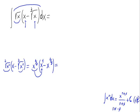x raised to 1 half times x raised to 1 is x raised to 1 half plus 1. And now, minus x raised to 1 half plus 1 third. This would be equal to 1 half plus 1, which is 3 halves — that is, x raised to 3 halves — minus x raised to 1 half plus 1 third, which is 5 sixths.